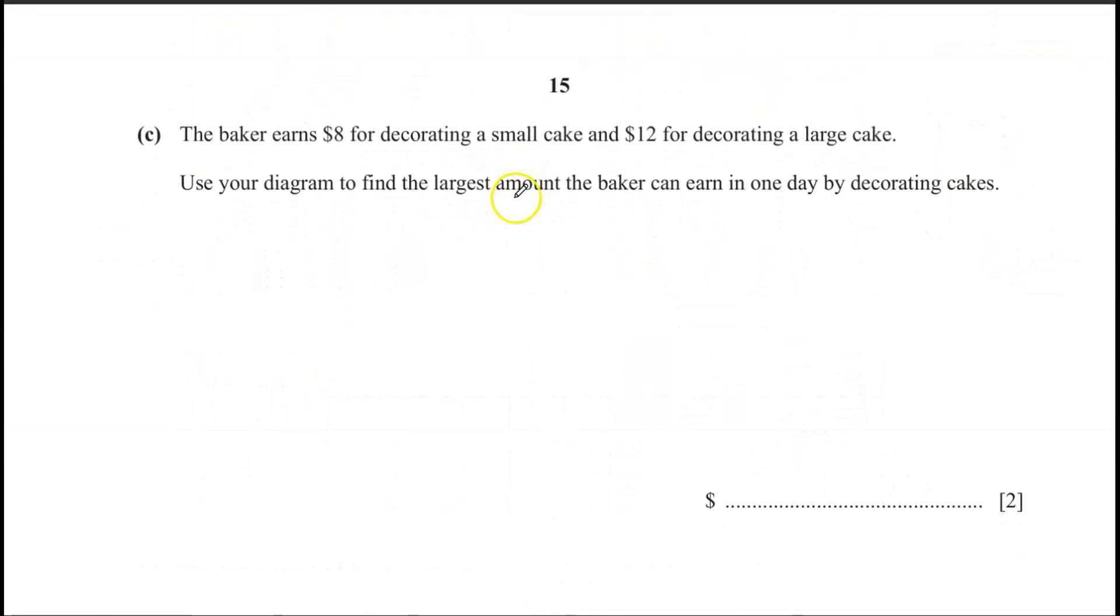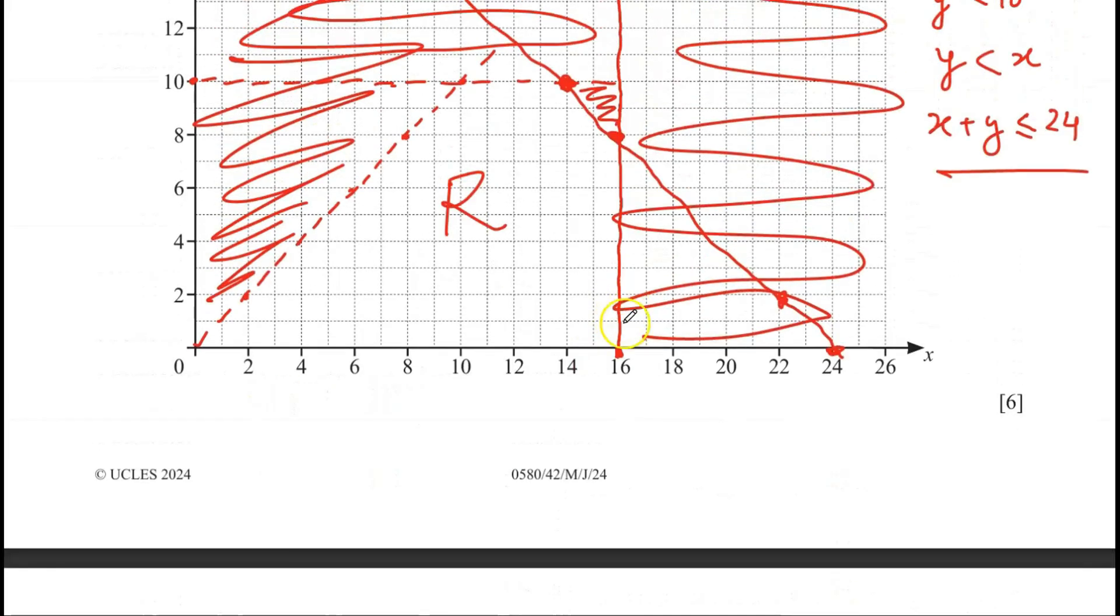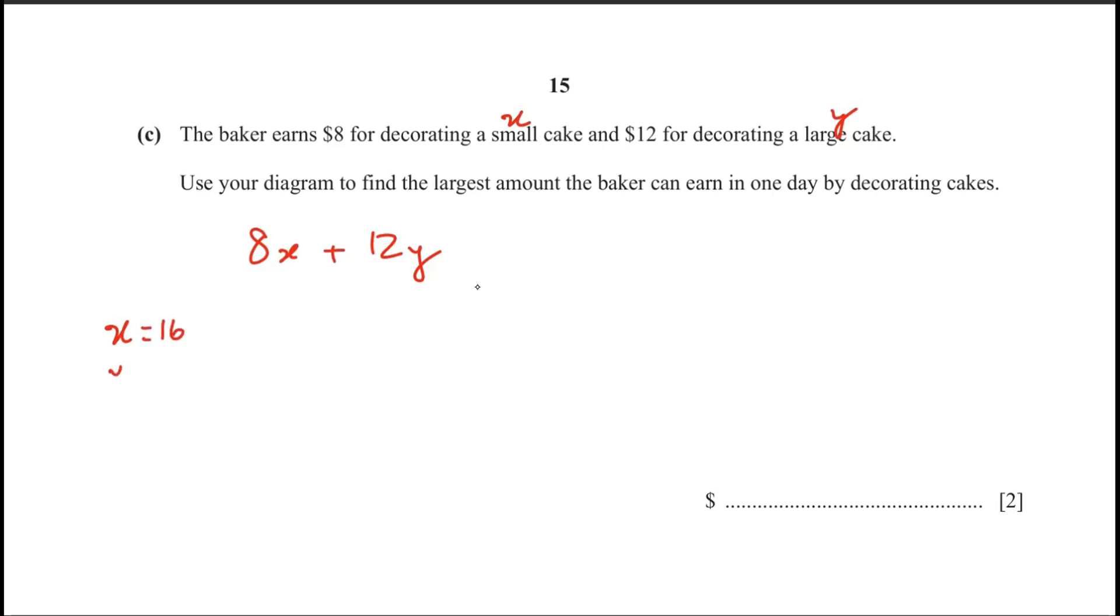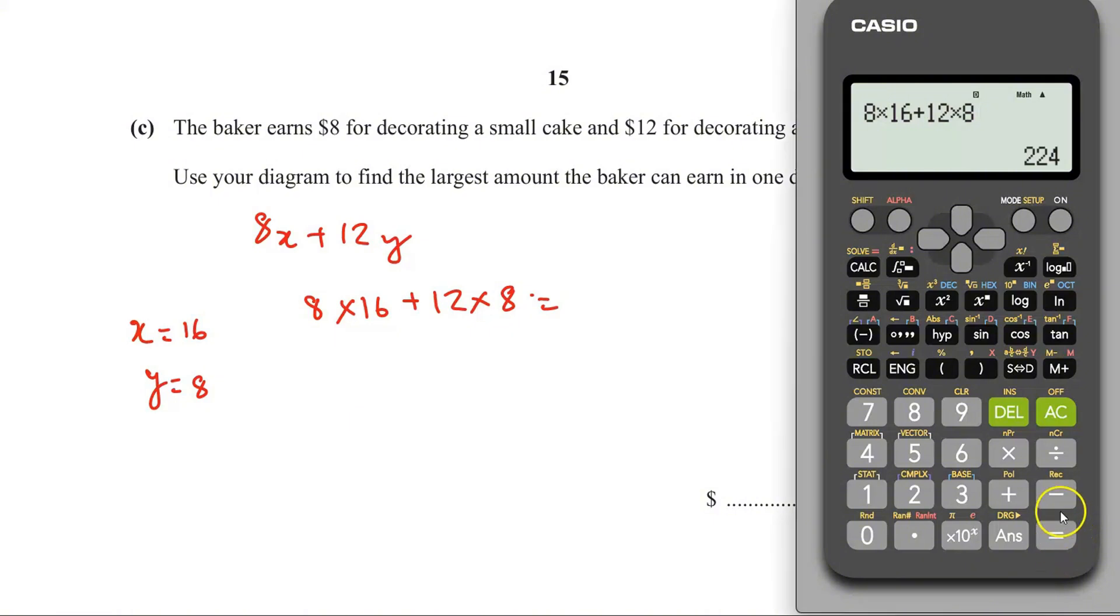And then let's go to part C. The baker earns $8 for decorating a small cake and $12 for decorating a large cake. Use your diagram to find the largest amount the baker can earn in one day by decorating cakes. So x represents small cakes and y represents large cakes. So if we multiply 8x and add with 12y, that should give us our expression. So let's go back to the diagram. Here x is 16 which is included. So if I take y as 8, x equal to 16 and y equal to 8. So let's work out this. 8 times 16 plus 12 times 8. Use our calculator. And that is equal to 224.